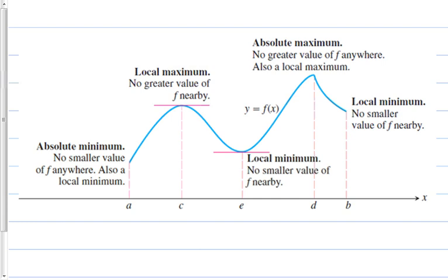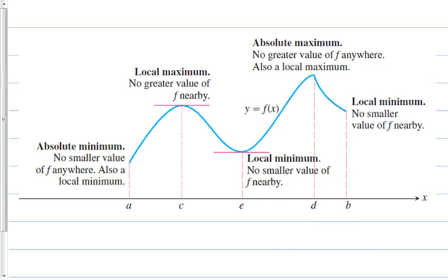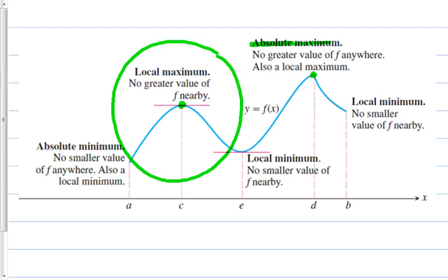Looking at the picture, we have quite a few minimums and maximums. There are two maximums, but one of them is a lot higher than the other. The one that's higher is going to be the absolute maximum. The other one is just the local or relative max, because in that area it is the highest point, but it's not the highest point on the whole graph.